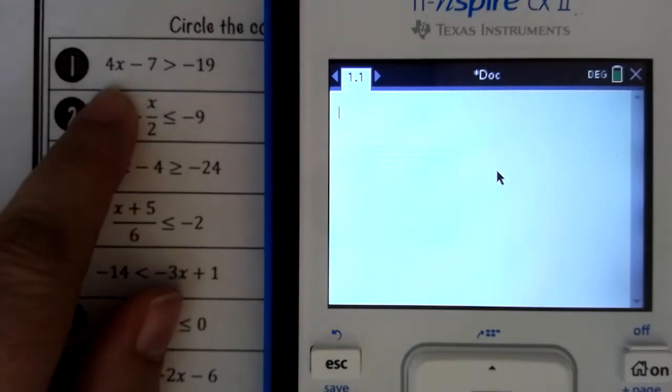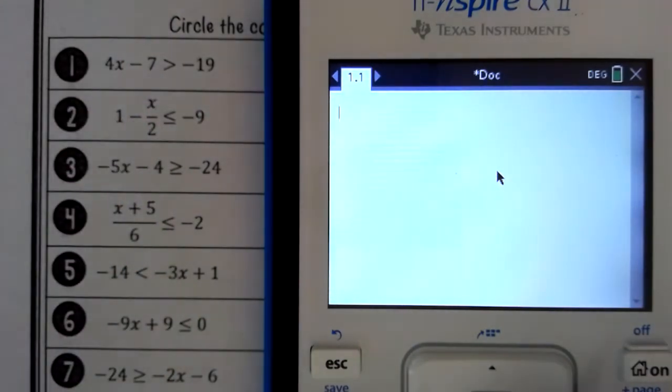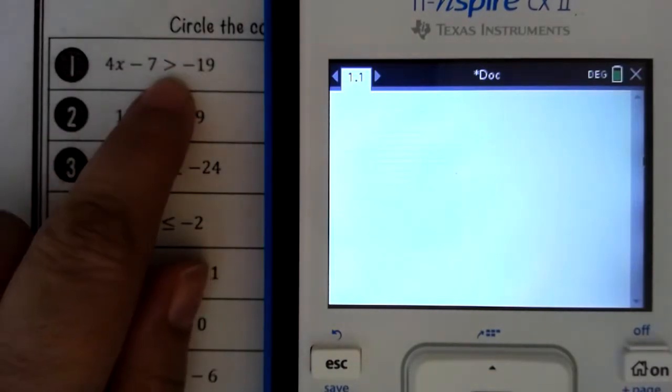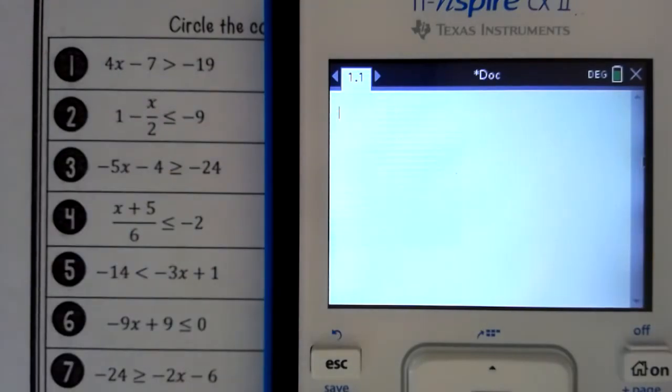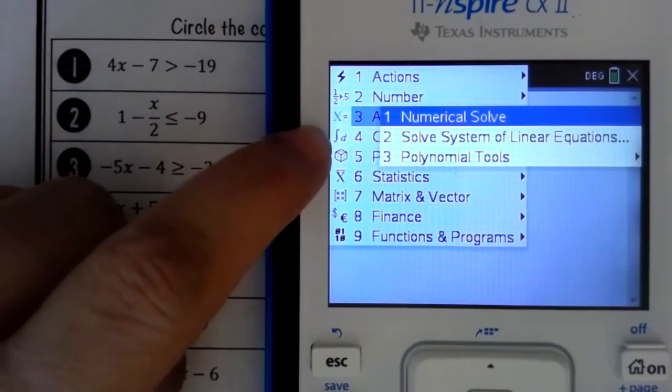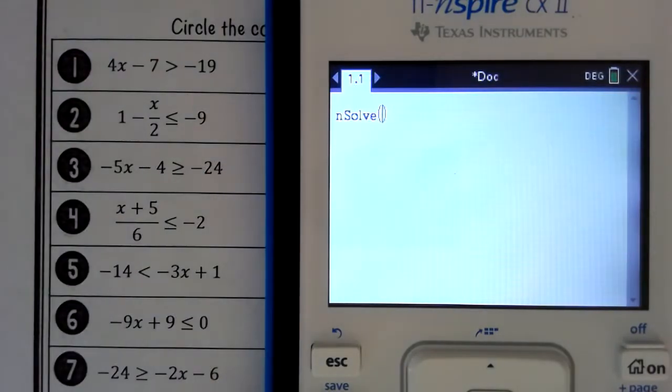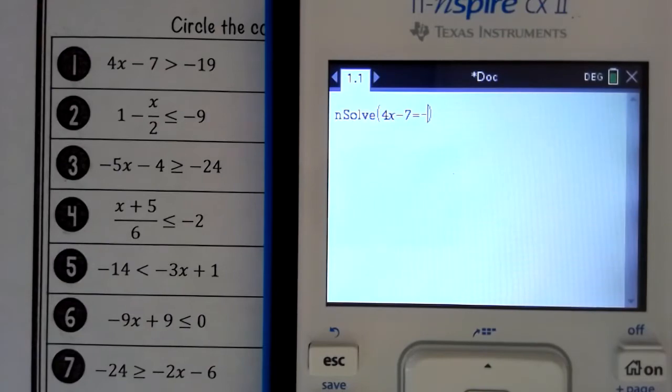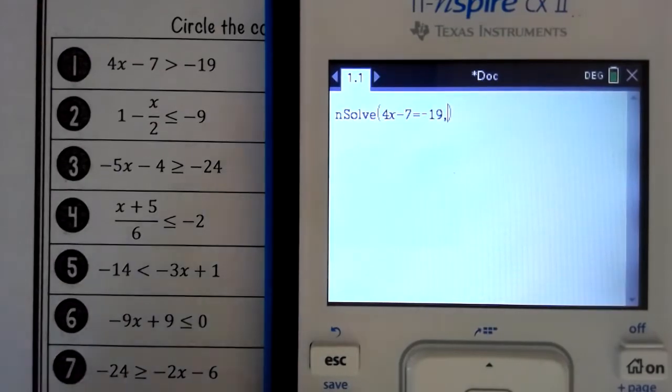You would just replace your less than sign or greater than sign with the equal sign. So if we're doing insolve, you do menu 3-1, and then 4X minus 7 equals negative 19. And then you have to tell the calculator, comma, I am solving for X.